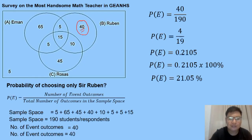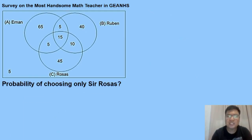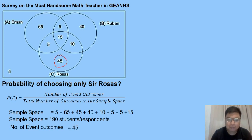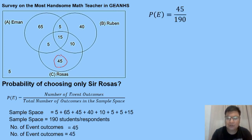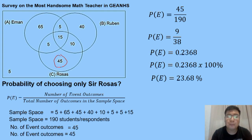Next: probability of choosing only Sir Rosas. Same formula, same sample space of 190. Since we want only Sir Rosas, we take the exclusive portion of her circle, which is 45. So probability is 45 over 190, lowest term is 9 over 38, which equals 0.2368 or 23.68% — the probability that students chose only Sir Rosas.